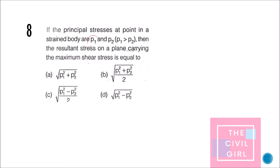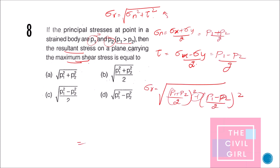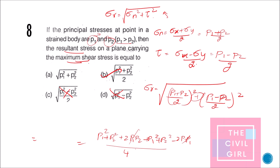Question 8: If the principal stresses at a point in a strained body are p1 and p2, where p1 > p2, find the resultant stress on the plane carrying the maximum shear stress. We need to find sigma n and tau on that plane. On the plane of maximum shear stress, sigma n = (p1 + p2) / 2 and tau = tau max. Substituting sigma x = p1 and sigma y = p2, the resultant stress simplifies to the square root of (p1² + p2²) / 2 — option B.